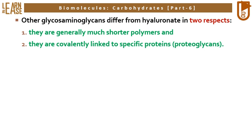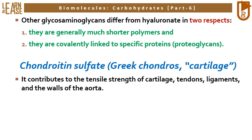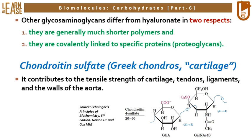Chondroitin sulfate derives its name from the Greek word chondros, meaning cartilage. It contributes to the tensile strength of cartilage, tendons, ligaments, and the walls of the aorta. Its structure is composed of two different monosaccharides: glucuronic acid and N-acetylgalactosamine with a sulfate on its fourth carbon.